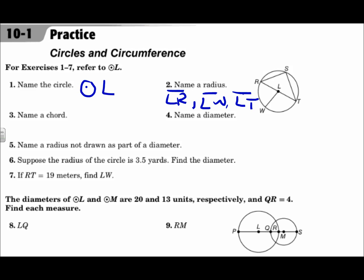Number three: name a chord. A chord is a segment where the endpoints are on the circle — like segment RS and segment ST, which have endpoints on the circle. Another chord is segment RT, because it also has endpoints on the circle. Any one of those is correct.